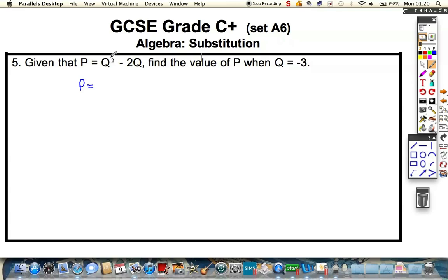So, P is equal to, now, we've got to be very careful with this, because we've got a minus 3. So, I'm going to put it into brackets, squaring a negative number. And here, we've got to be especially careful, because we've got minus 2 times Q, but Q is a negative number.